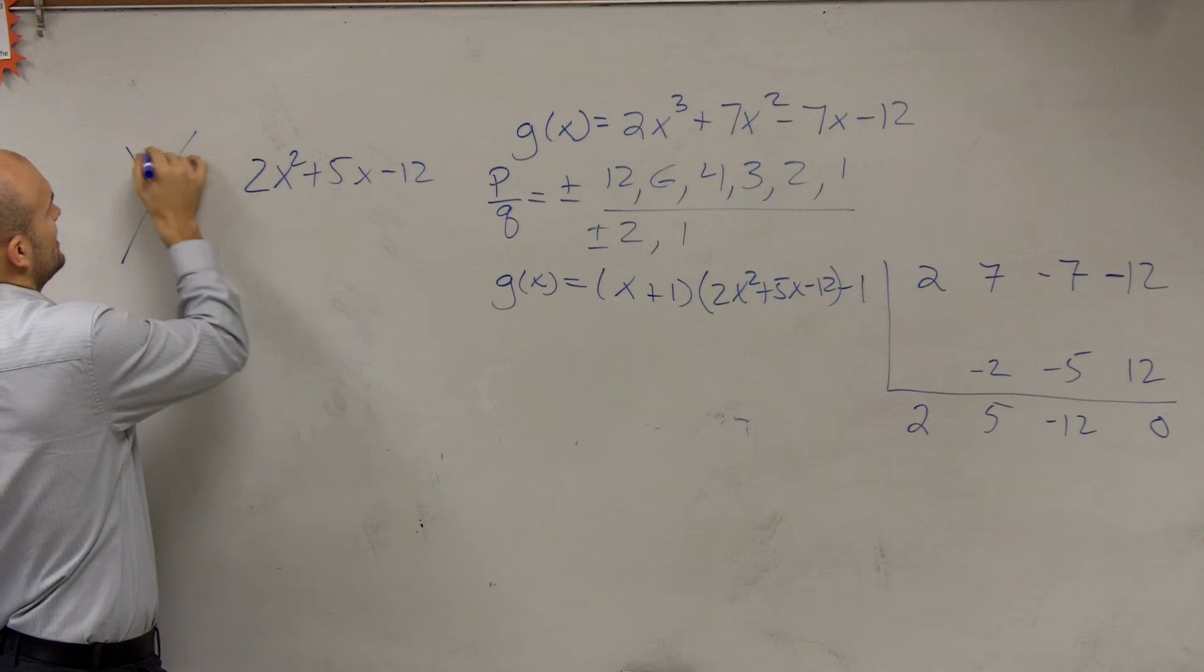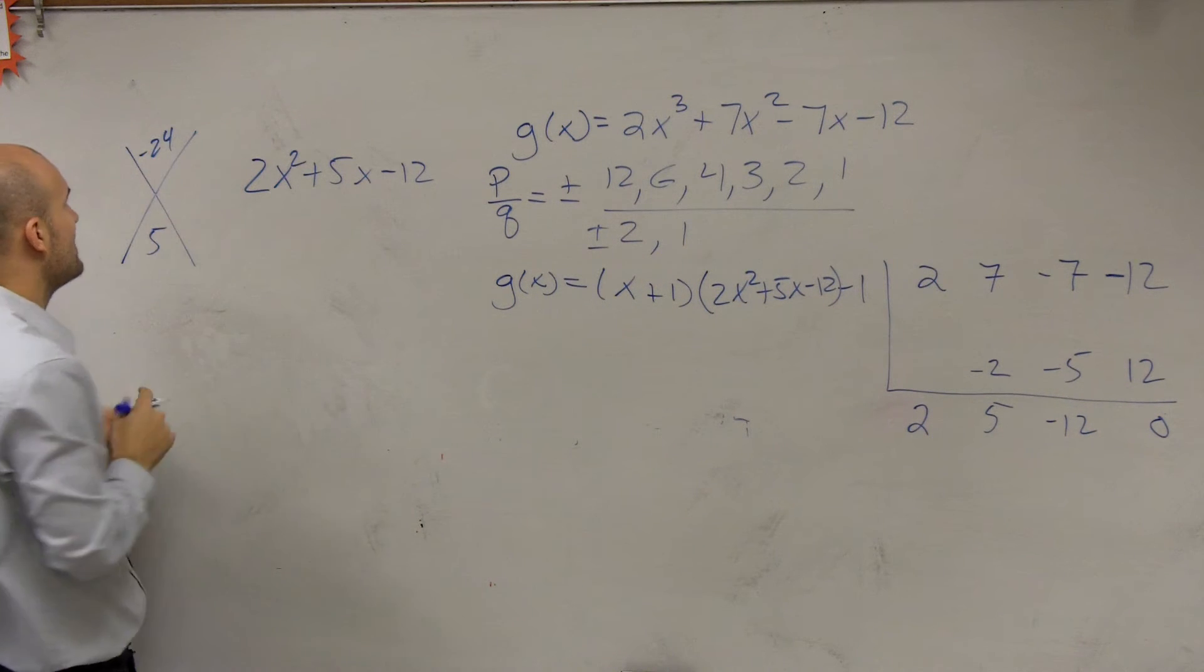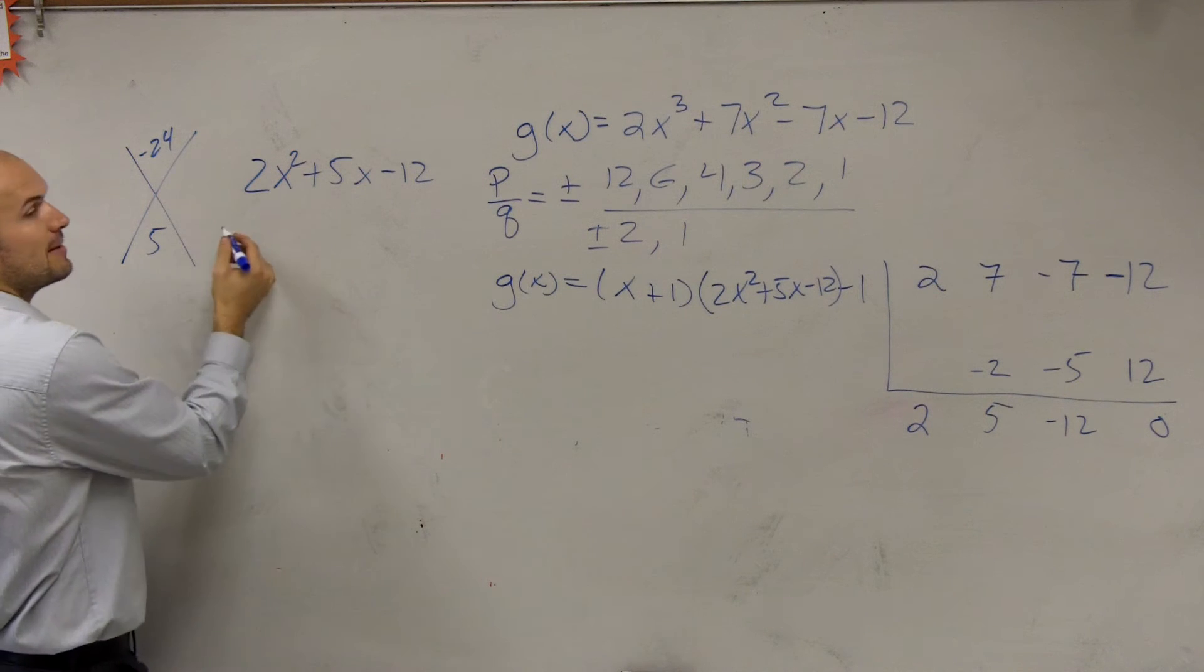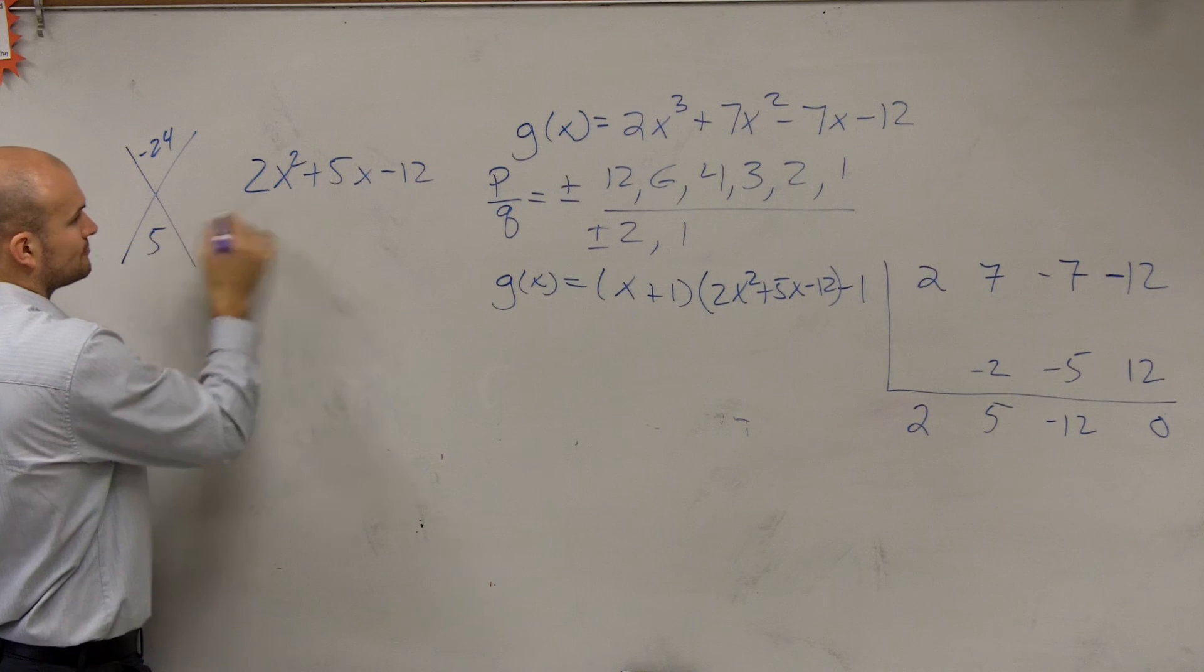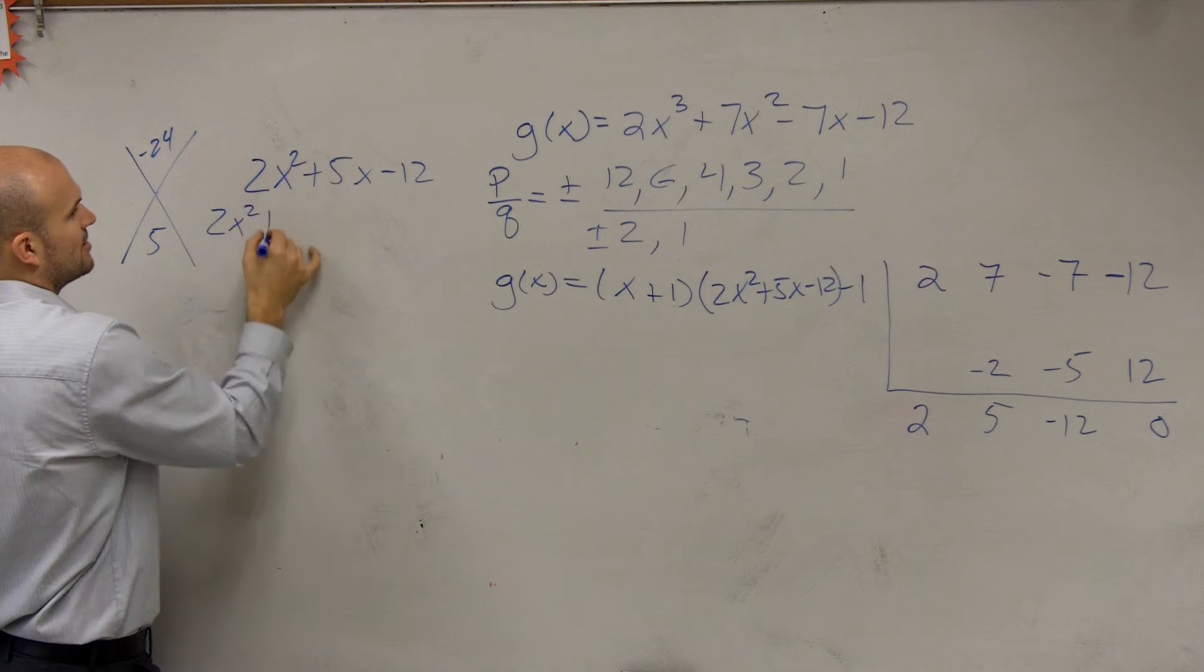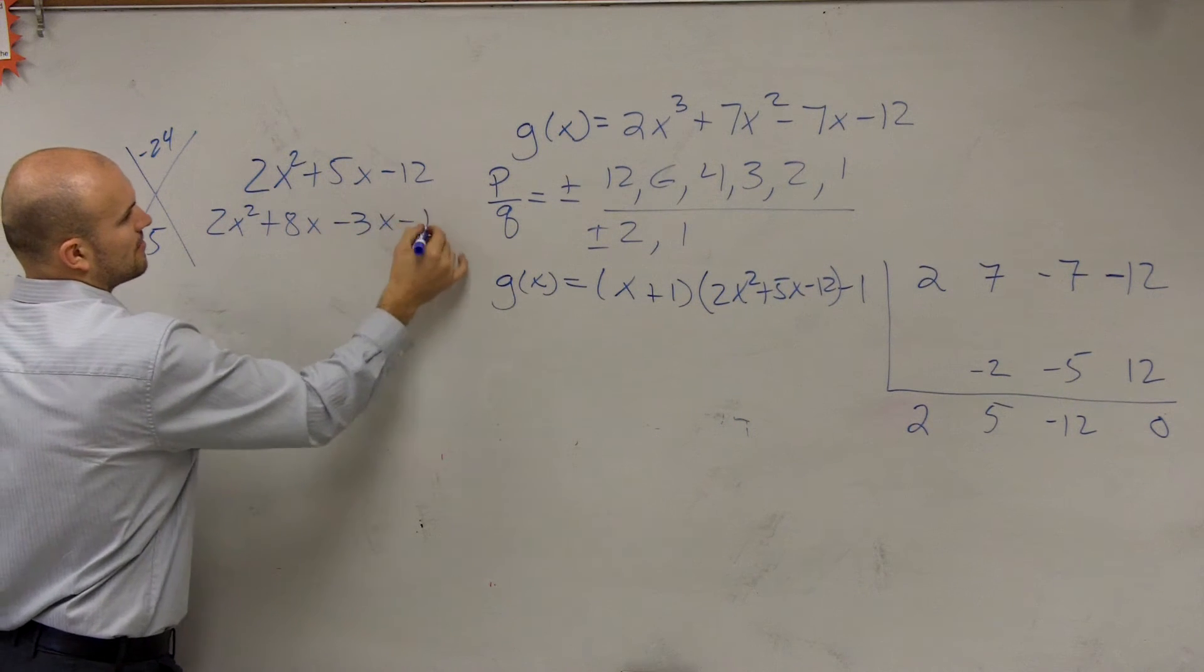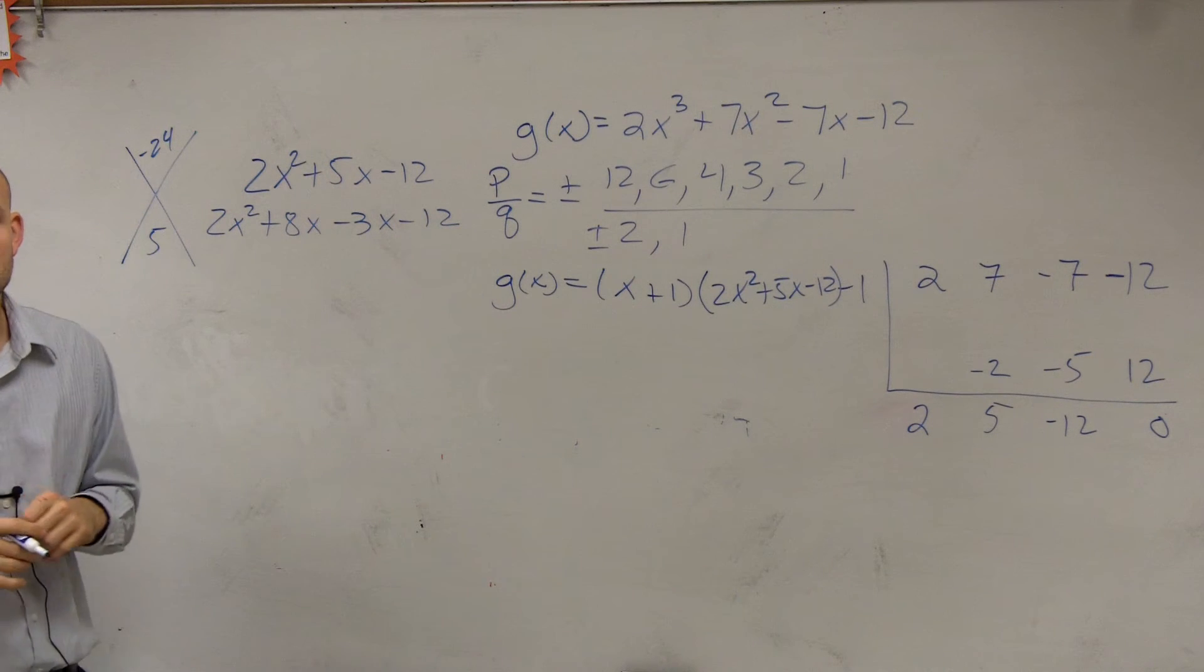So we need to factor this. So you could say, alright, negative 24, positive 5. What two numbers multiply to give you negative 24, add to give you 5? 8 and 3. Yeah, so you could say x, you could say 2x squared plus 8x minus 3x minus 12, right? Won't that work?